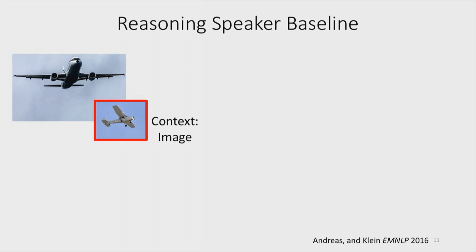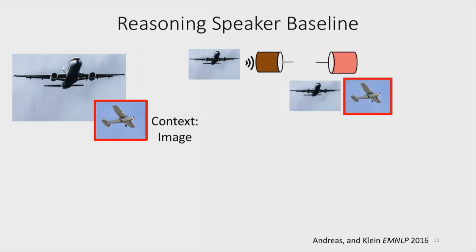Given this task, we can construct a simple baseline called a reasoning speaker. You're given a target and a context image. You train a regular image captioning model that takes in an image and generates a sentence. Sampled outputs from that first stage can be fed into a re-ranker, which has access to both the target and the distracted image, to re-rank which sentence seems more discriminative and select that as the output.